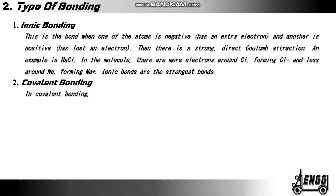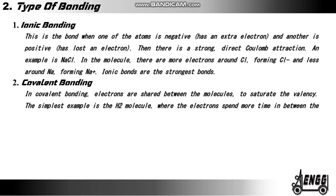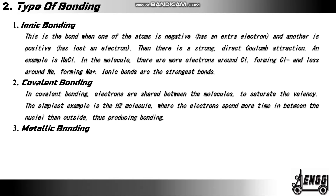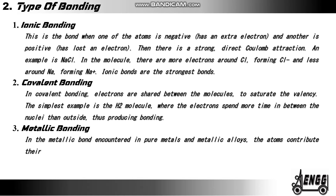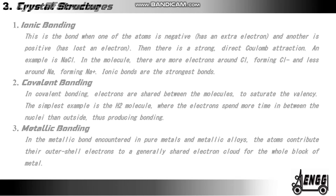Covalent bonding. In covalent bonding, electrons are shared between the molecules to saturate the valency. The simplest example is the H2 molecule where the electrons spend more time in between the nuclei than outside, thus producing bonding. Metallic bonding. In metallic bonds, encountered in pure metals and metallic alloys, the atoms contribute their outer shell electrons to a generally shared electron cloud for the whole block of metal.